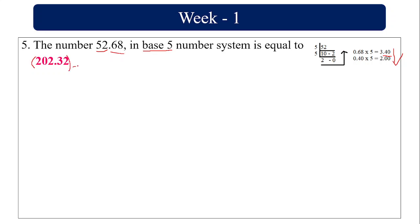Similarly, if they ask you to convert to base 7, divide 52 by 7 and multiply the decimal part by 7.